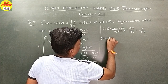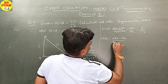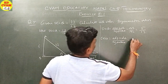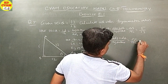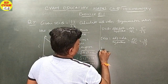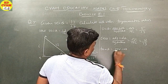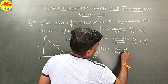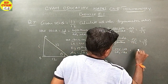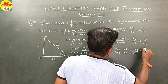Cos theta is equal to adjacent side upon hypotenuse, which equals BC upon AC. That is, 12 upon 13. Tan theta is equal to opposite side upon adjacent side, which equals AB upon BC. That is, 5 upon 12.